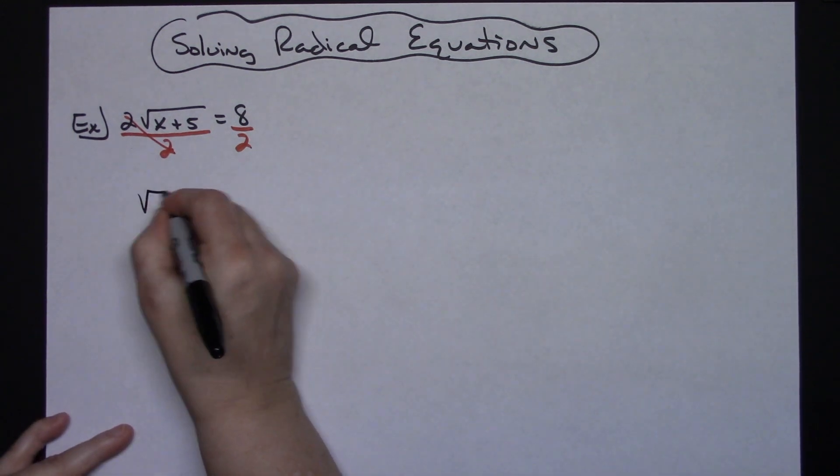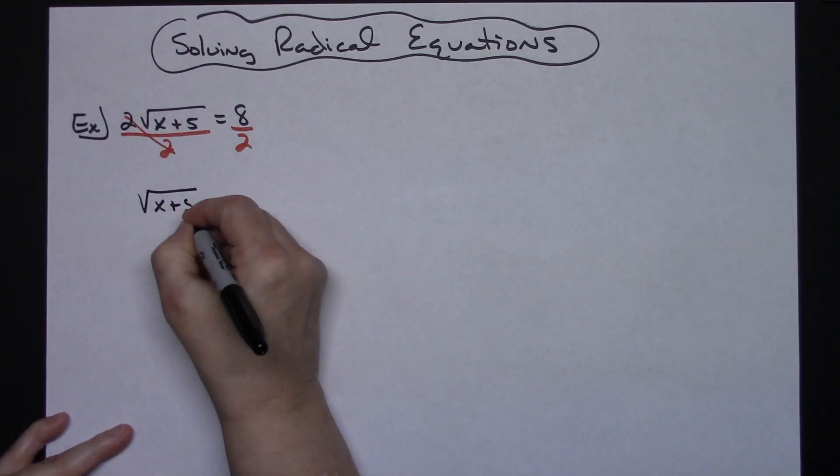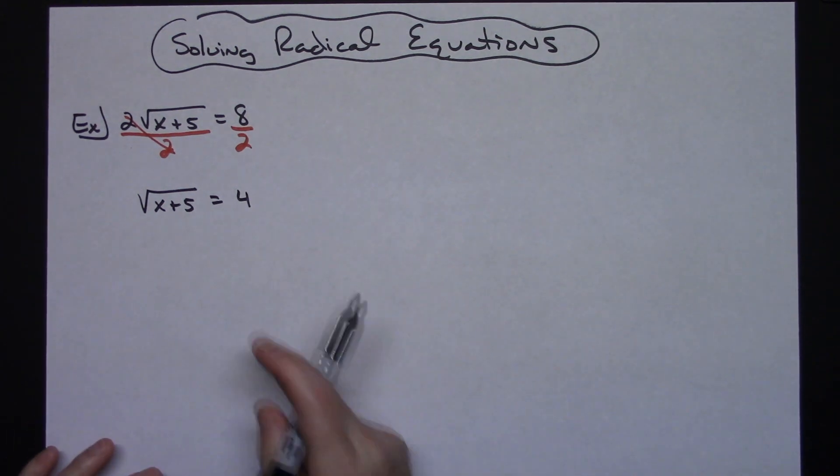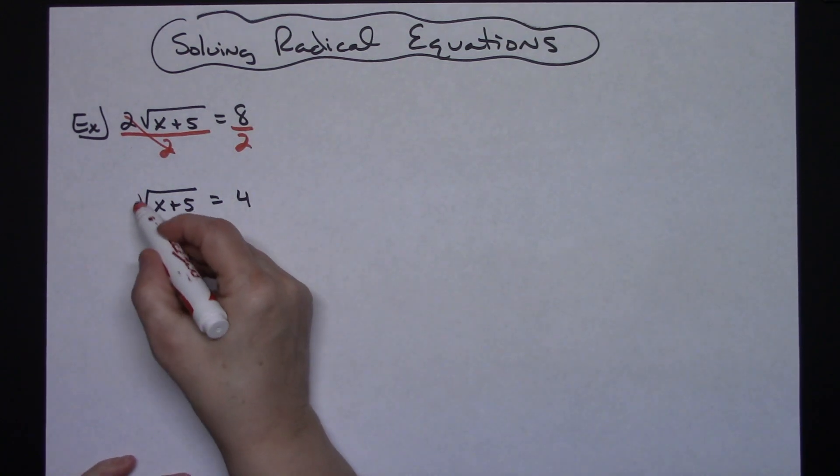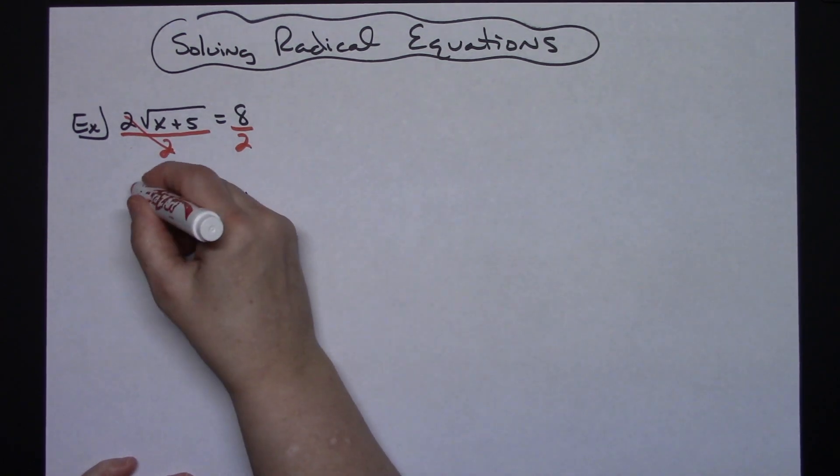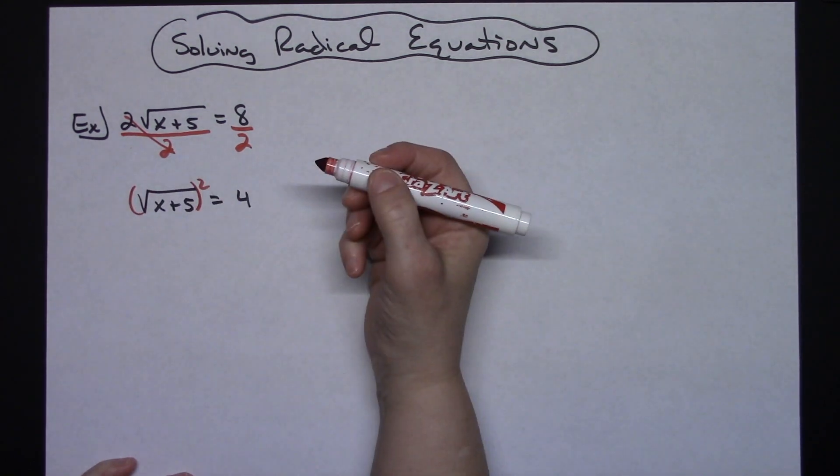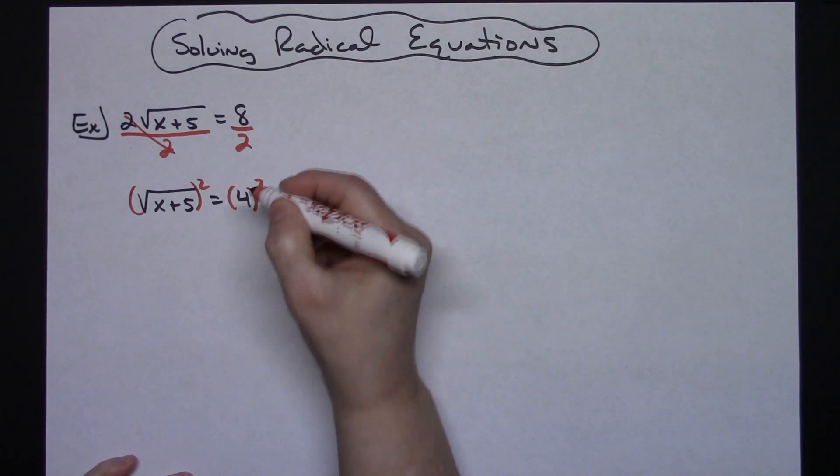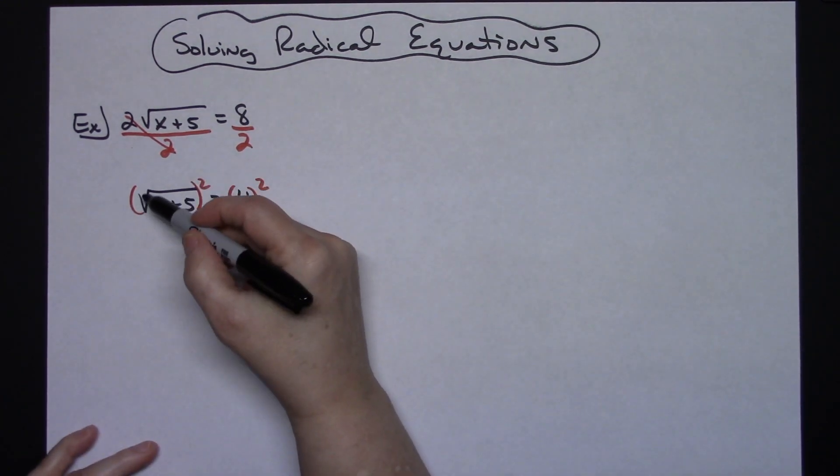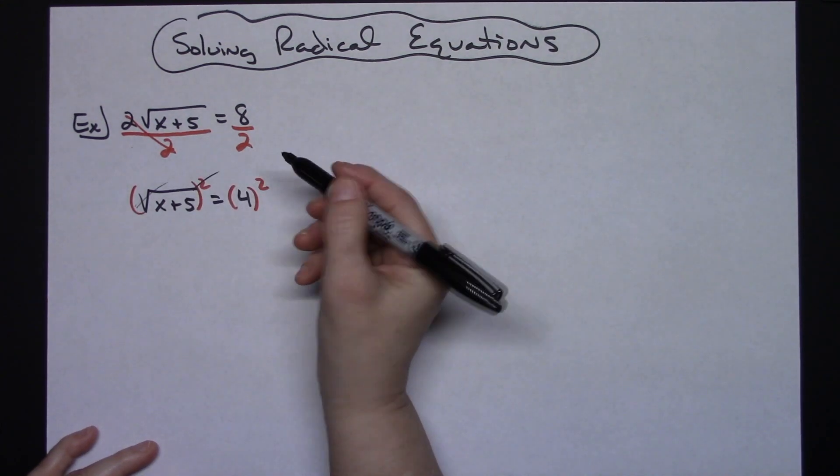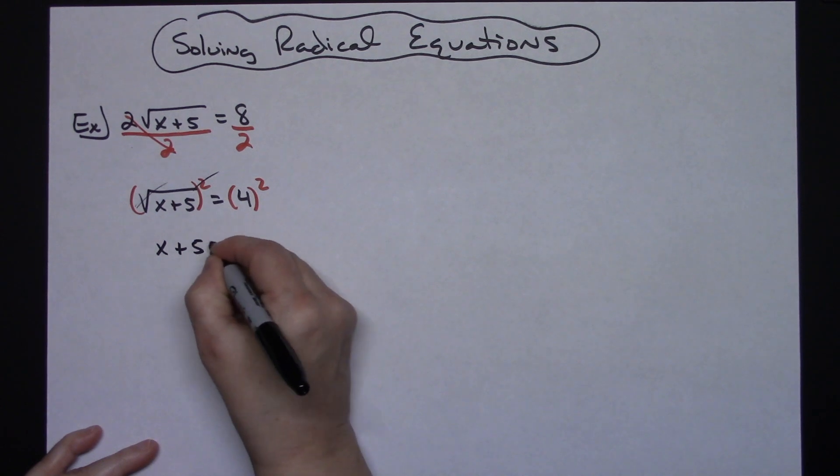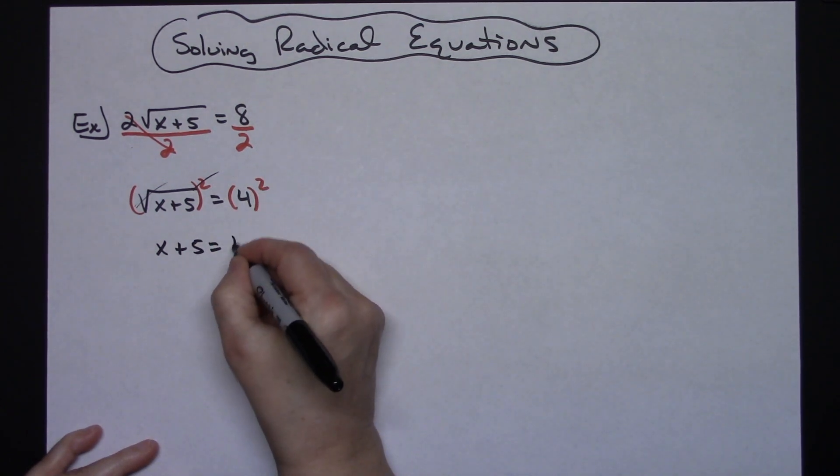That's going to give me the square root of x plus 5 equals 4. Now this radical has been isolated, so I can do my inverse operation to get rid of that square root. The inverse operation would be squaring it. So I'm going to square the left-hand side and square the right-hand side. When I do that, the square root and the square cancel each other out—they are inverse operations—so then I'm going to have x plus 5, and on this right-hand side I'll just have 16.